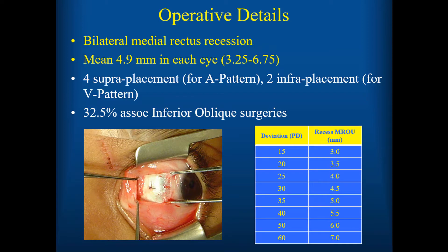We did bilateral medial rectus recession on all patients. The mean amount of surgery was 4.9 millimeters. We superplaced the medial rectus on four patients for A pattern and inferiorly placed it for V pattern. 35.5% had associated inferior oblique surgeries, since many of these patients have inferior oblique overaction and I do surgery on these at the same time if I'm already operating on the medial rectus. This is the table I use from my atlas.